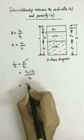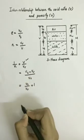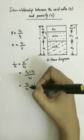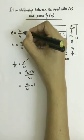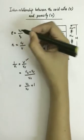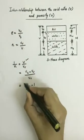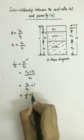When we simplify this, it becomes Vs by VV plus 1. So look at this equation. VV by Vs is void ratio. So you can write this term as 1 by E plus 1.